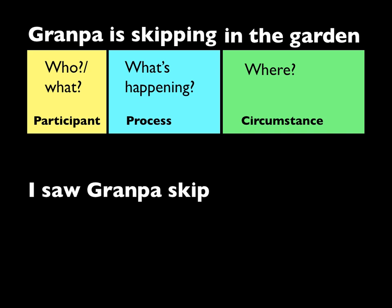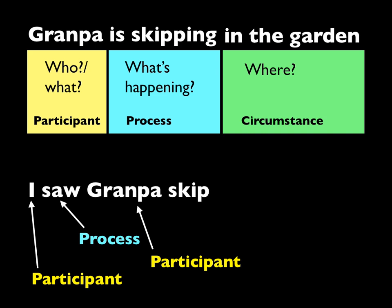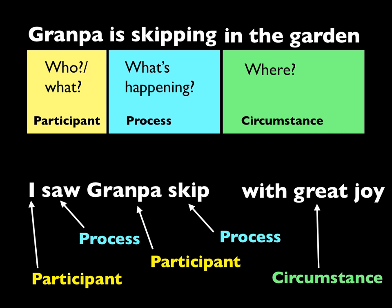Let's try this one: 'I saw Grandpa skip.' Who or what? Well, it was me — I. Participant. Did what? Saw — mental process. Who or what? Grandpa. Participant. Do what? Skip — material process. Now let's add a circumstance: 'With great joy, I saw Grandpa skip, with great joy.'